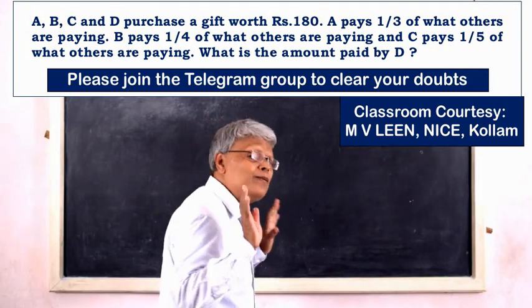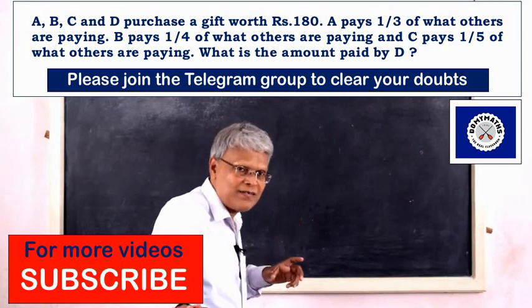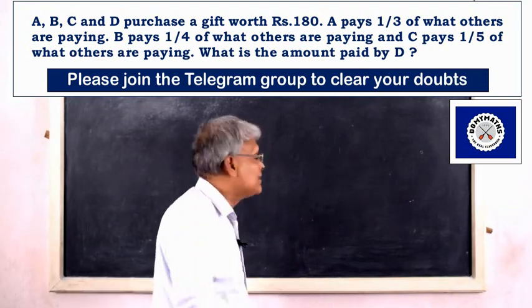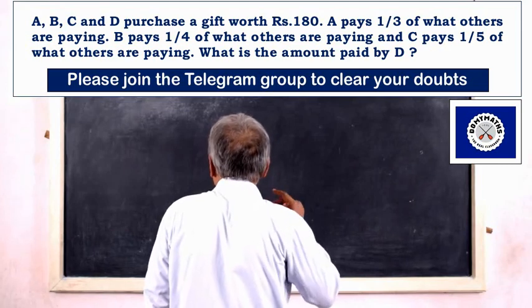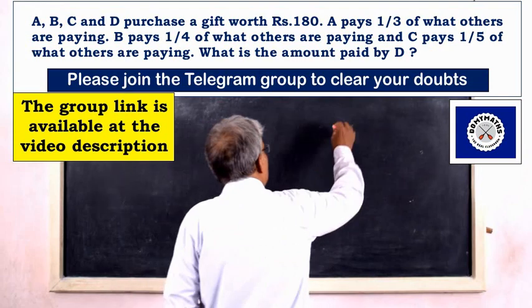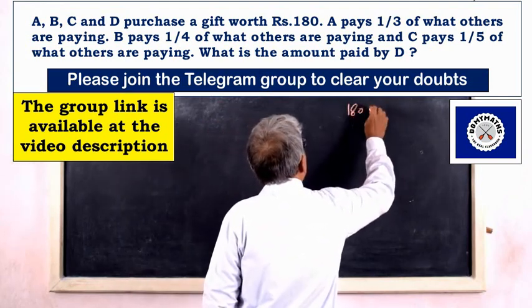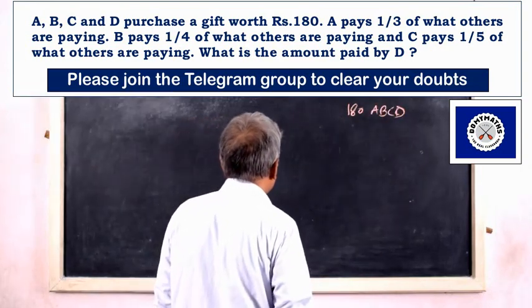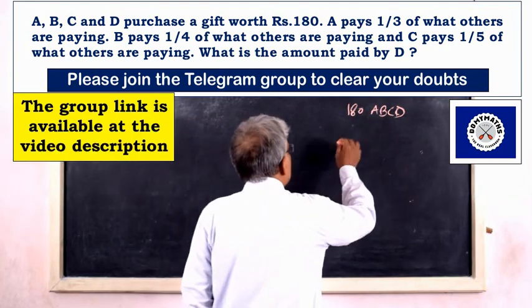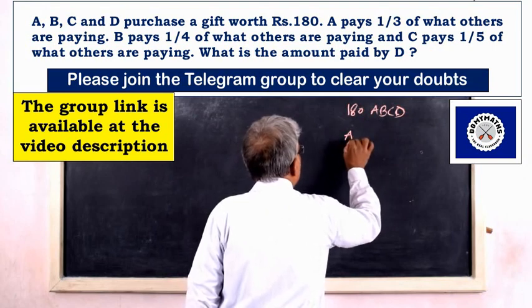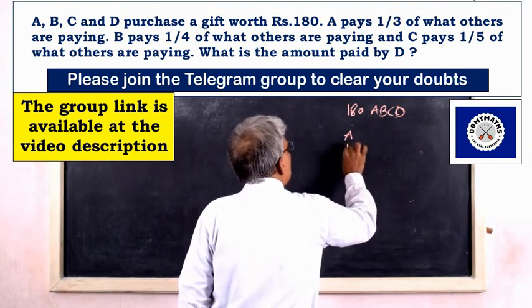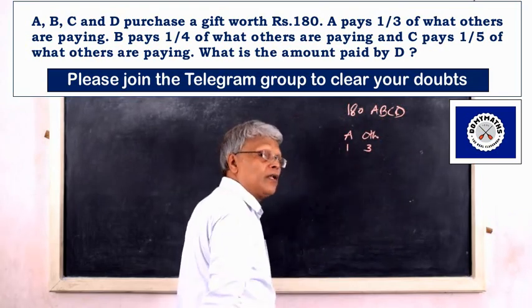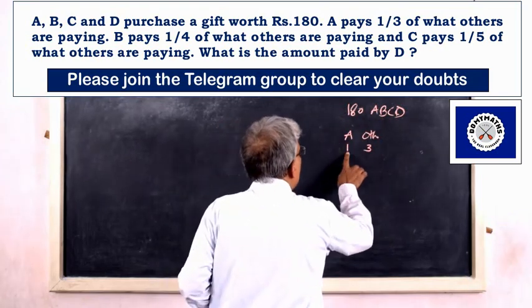A, B, C, D purchase a gift worth ₹180. A pays one-third of what others are paying.